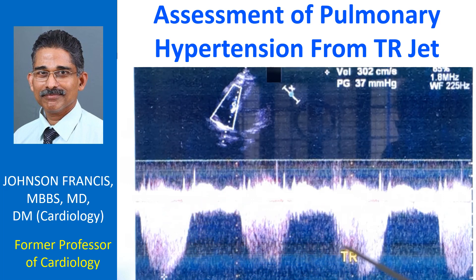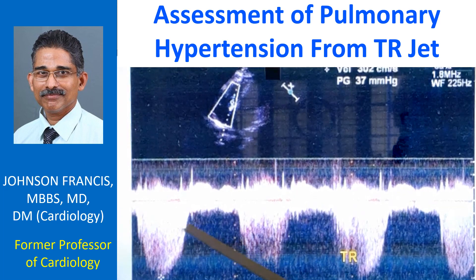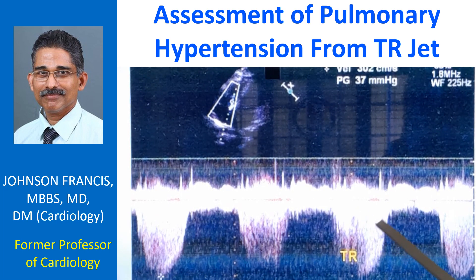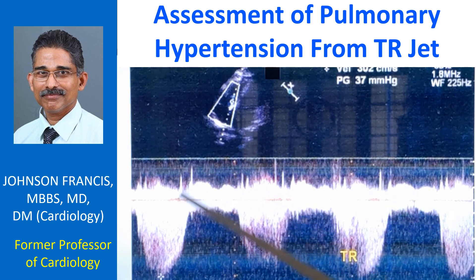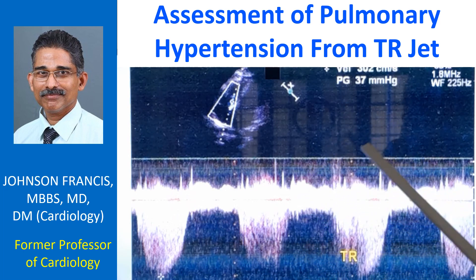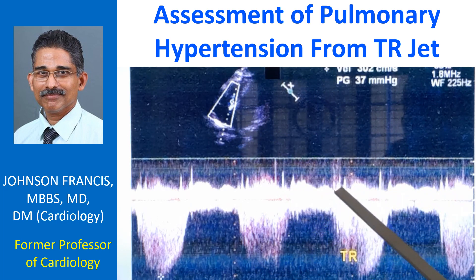This is an incomplete jet. This is also incomplete. This is a good jet. The change in density could be because of variation in the tricuspid regurgitation volume in different phases of respiration. In inspiration, the volume will be more and you will get a dense jet. There could also be changes because the position of the cursor with respect to the tricuspid valve could also change — that could be another reason for differences in the intensity of the jets.